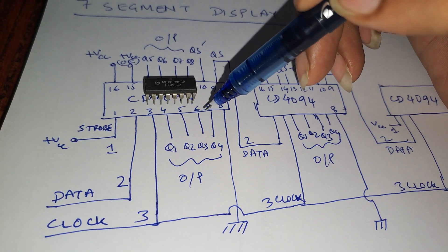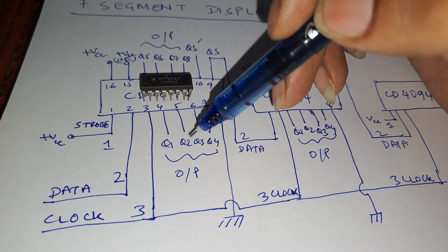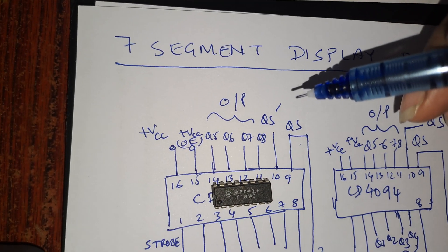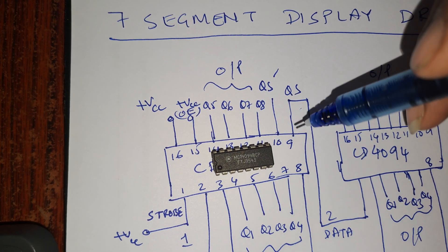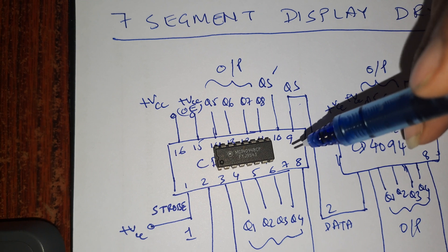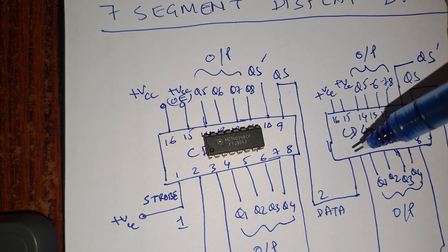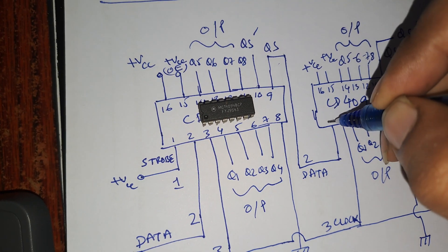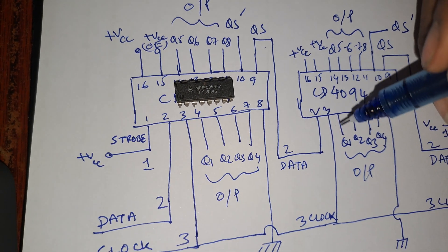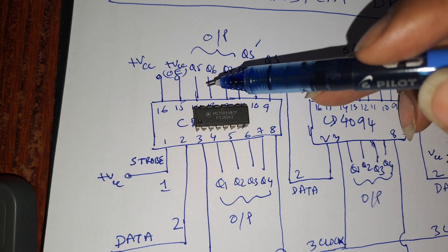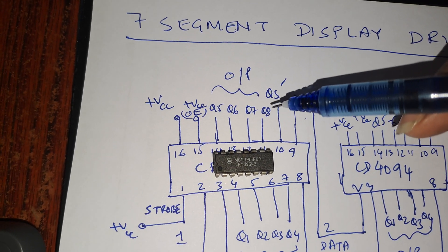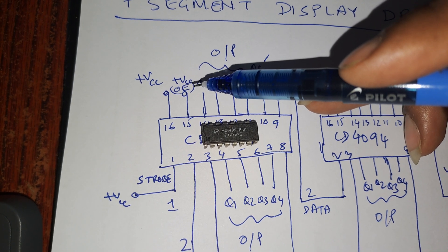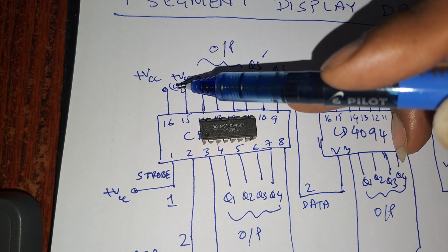Pin number three is connected to the clock, and pins four, five, six, and seven are the output pins — these are directly connected to the 7-segment displays. Pin number eight is ground. Pin number nine is QS — the serial output. Whatever is the last value on the shift register, it will be transmitted as data to the second shift register by connecting pin nine to pin two of the next shift register. Pin fifteen is the output enable, connected to supply VCC.